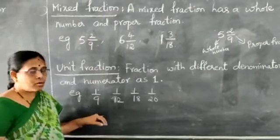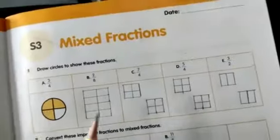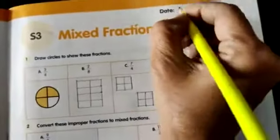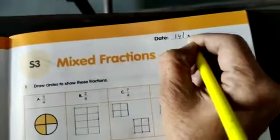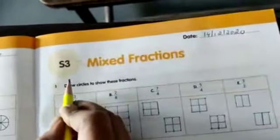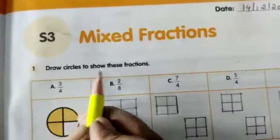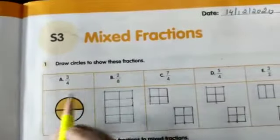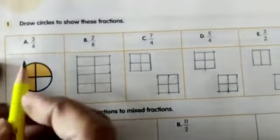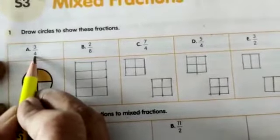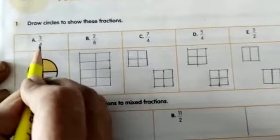Now we will see our workbook. Open your workbook. Date: 14/12/2020. Mixed Fractions. First question: Draw circles to show these fractions. Part A: 3/4. The denominator always shows the total parts.